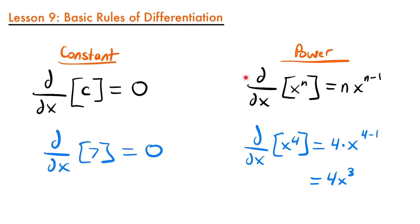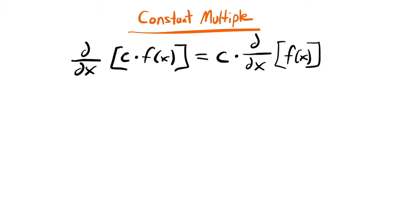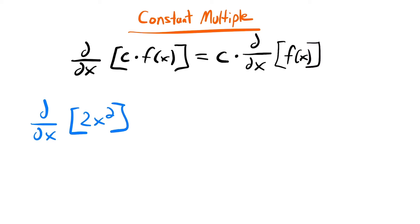These are the two most basic derivative rules, but there are a few more to learn. Next we have the constant multiple rule, which says that when you have a constant multiplied by some function that you're taking a derivative of, you can rewrite this as that constant times the derivative of just the function. For example, for the derivative of 2x squared, our constant is 2 and our function is x squared.